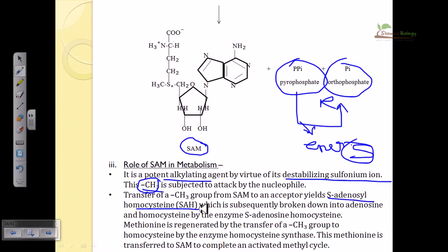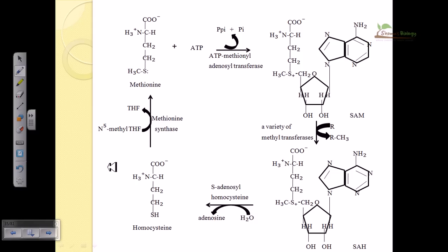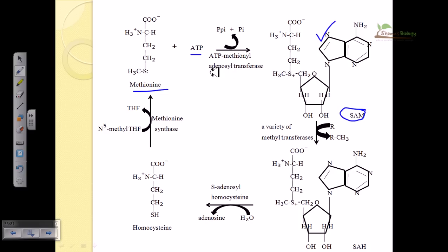The enzyme that converts SAH into other components is adenosylhomocysteine hydrolase. In the cycle, methionine and ATP are combined to make S-Adenosylmethionine. The enzyme that catalyzes the production of SAM from methionine and ATP is called ATP-methionine adenosyltransferase, which transfers the adenosine group from ATP to methionine to produce S-Adenosylmethionine.